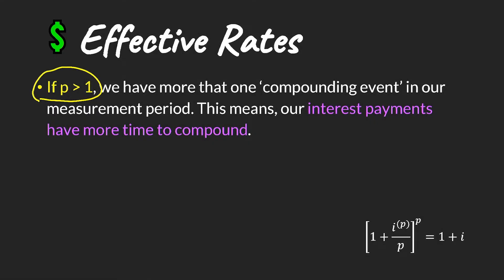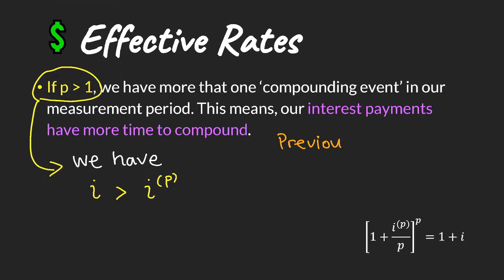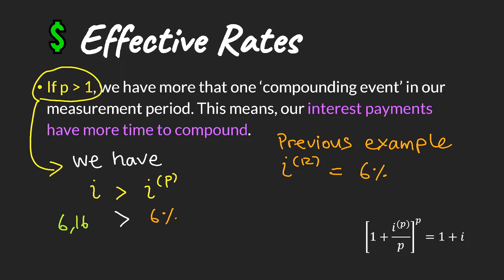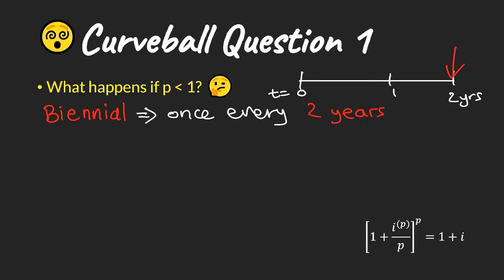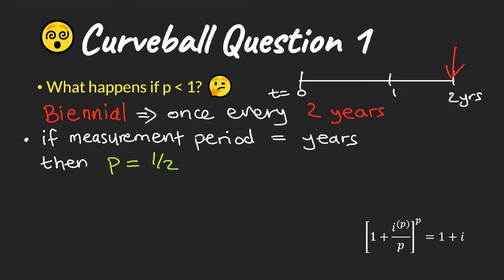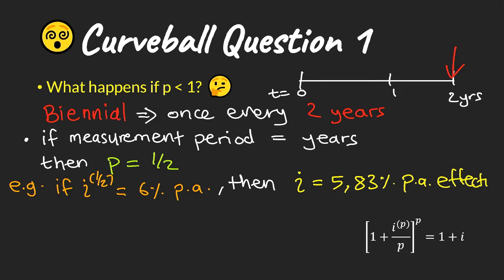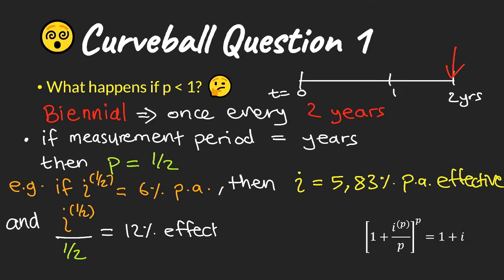Coming back to nominal and effective rates: if p is greater than one, we have more time to compound our interest payments, which means our effective interest rate will always be higher than our nominal interest rate — as we saw in our example where i^(p) = 6% but the effective rate was higher. What if p is less than one? Biennial means once every two years, so if our measurement period is in years, p becomes one-half. Doing the calculations, our effective interest rate would be 5.83%, which is less than the nominal rate. Be on the lookout for these types of questions.